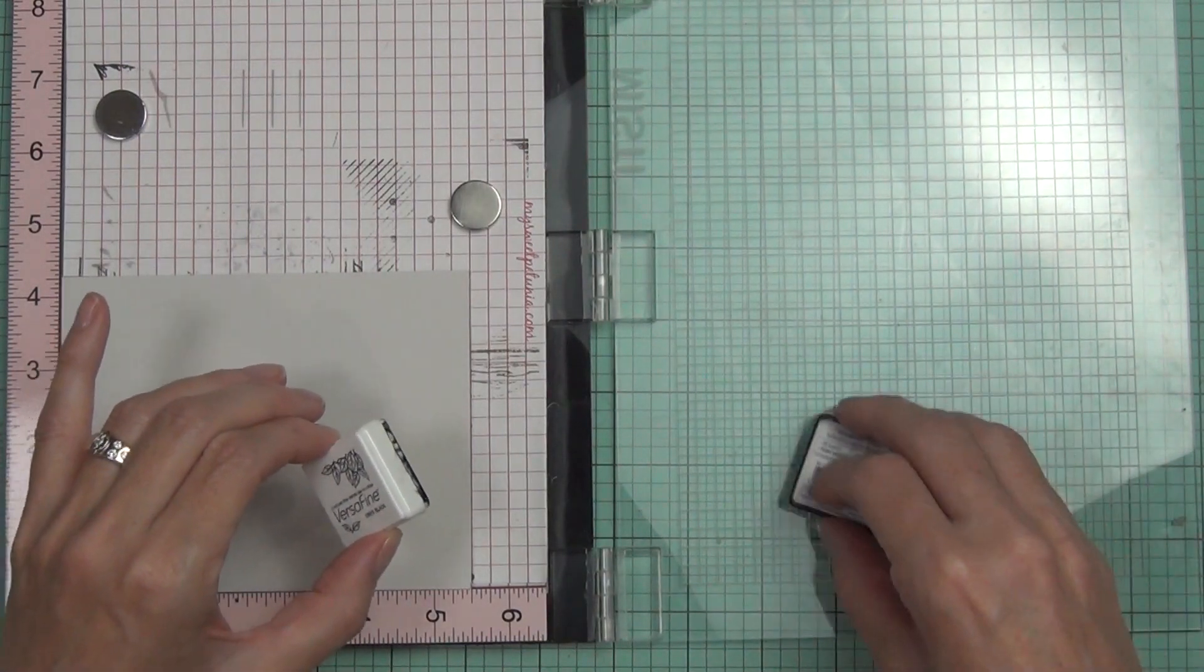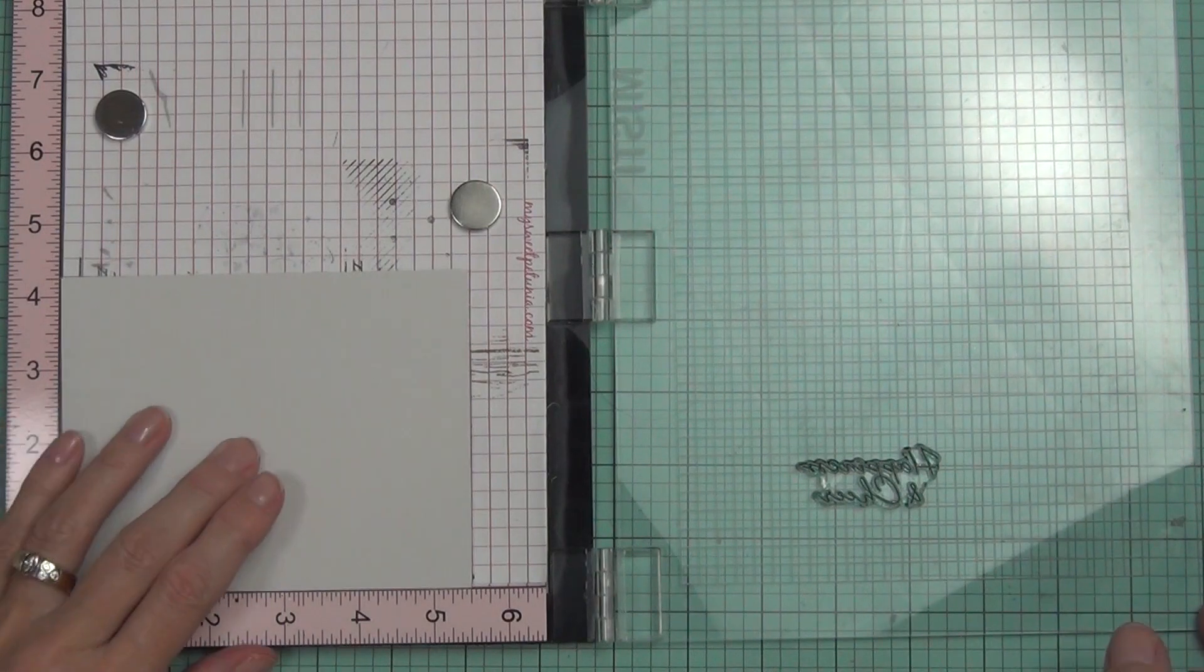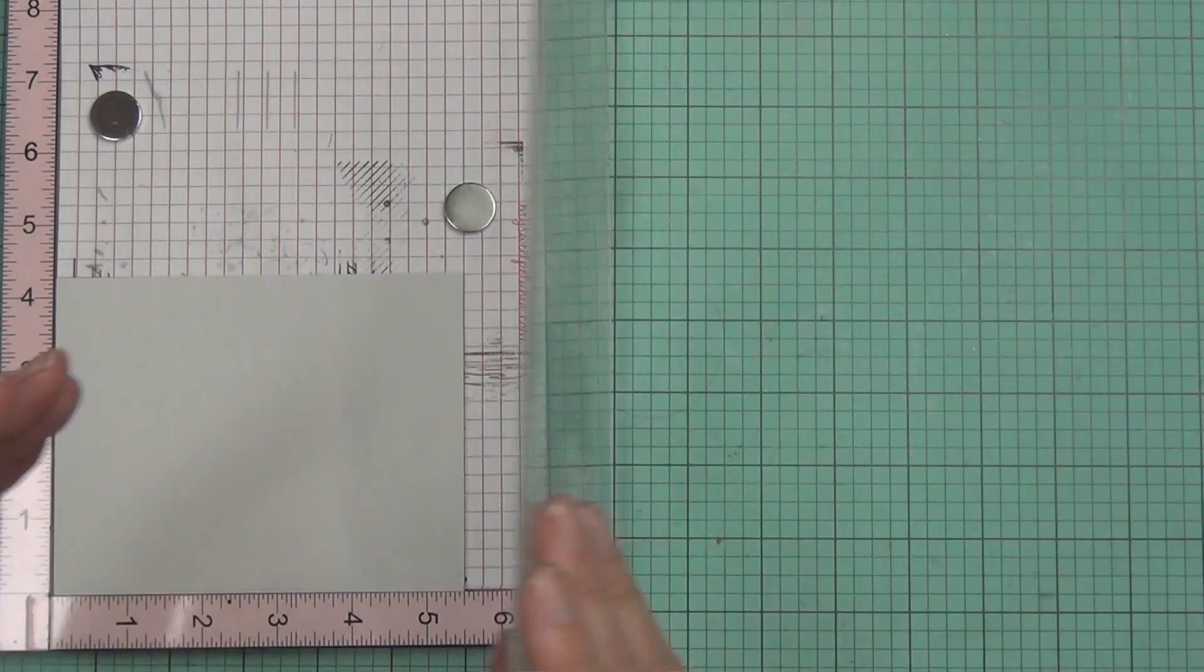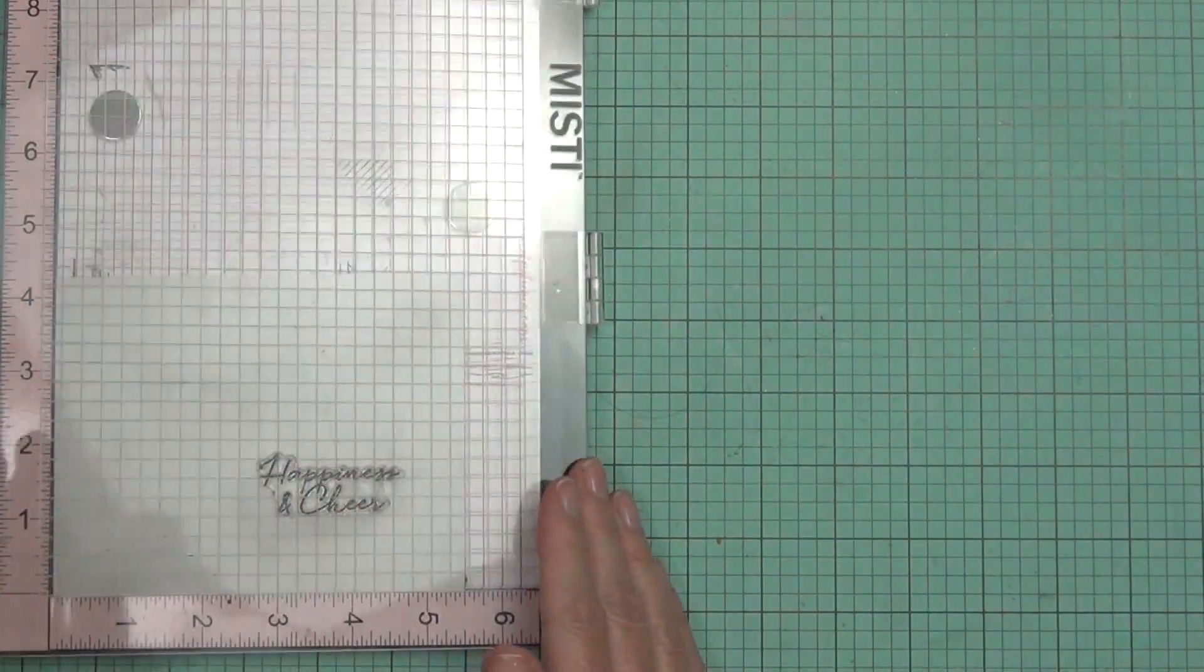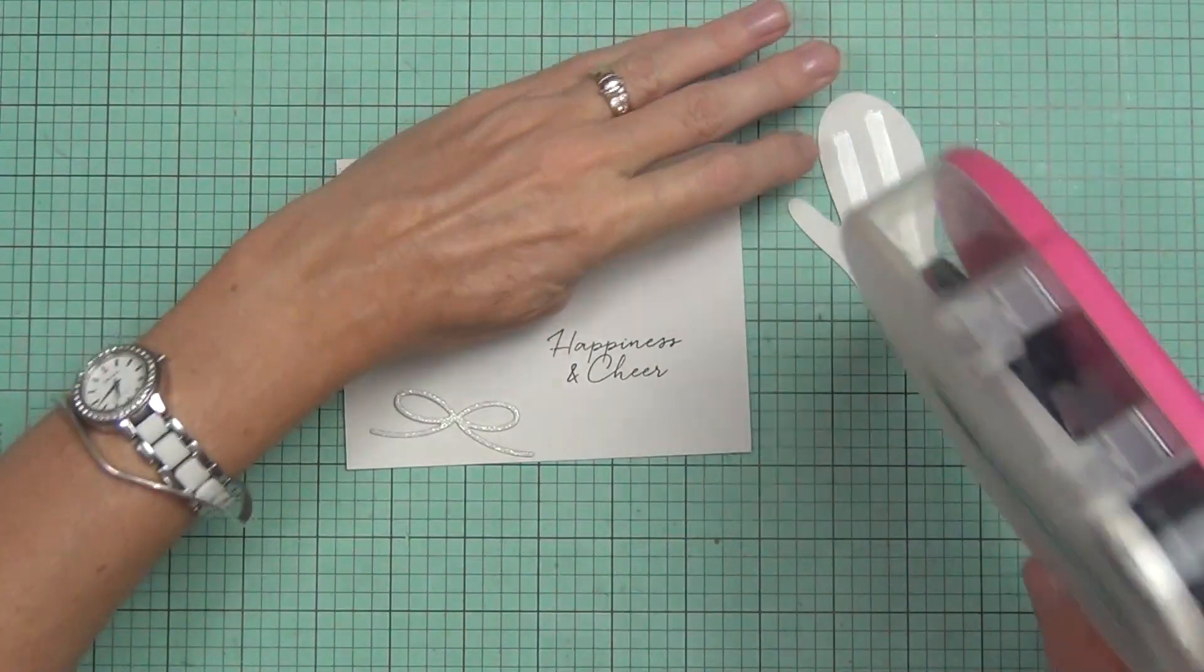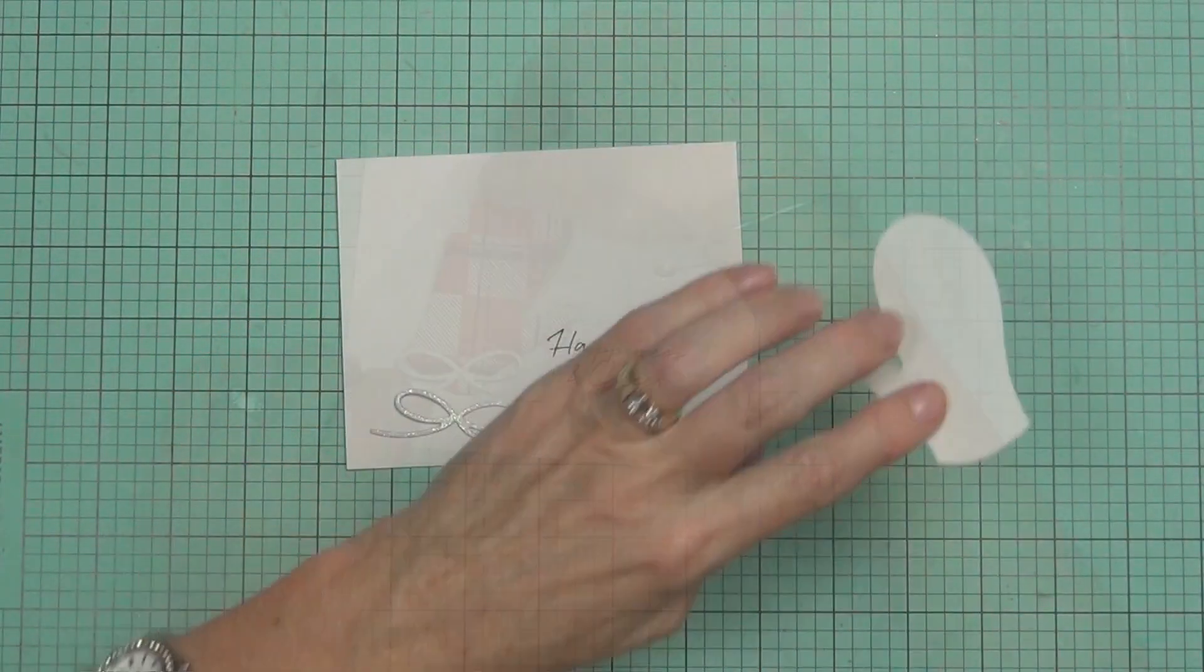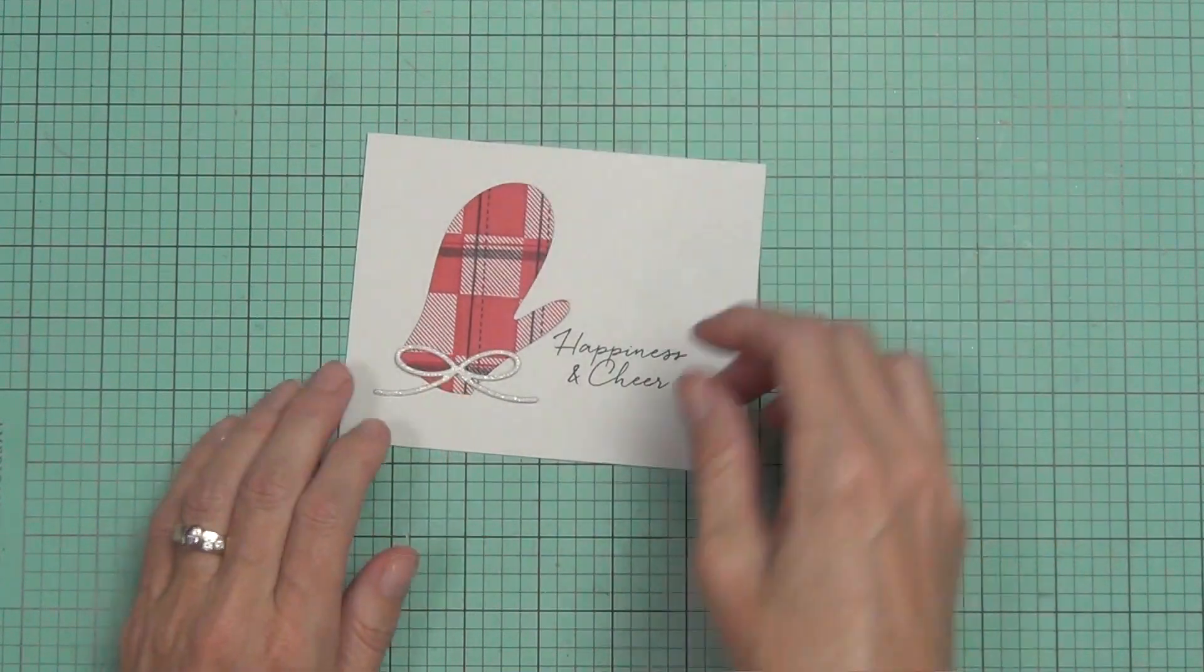And I love these little plaid mittens—they're so cute. All right, on the front of my card I'm not going to go overboard. I've just got a piece of the Oyster Gray cardstock again and I'm adding a sentiment which is from the Mondo Holly stamp set. It's a beautiful font on this one.